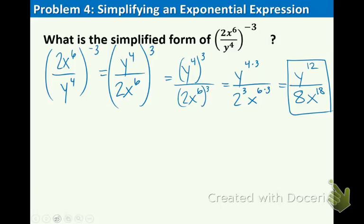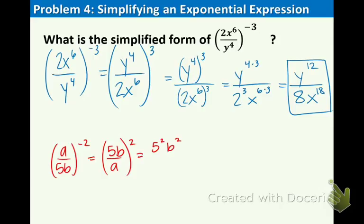In case you're interested in one more example, here it is. It's pretty quick. a over 5b raised to the negative 2nd. First thing is have the 5b and the a trade places. Make it a positive 2. Share that 2 with everything inside. So we have 5 squared, b squared, a squared. Last thing, 5 squared is 25. b squared and a squared stay the same. That's your answer.